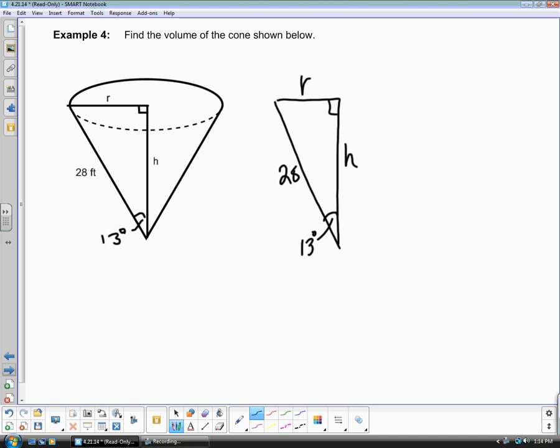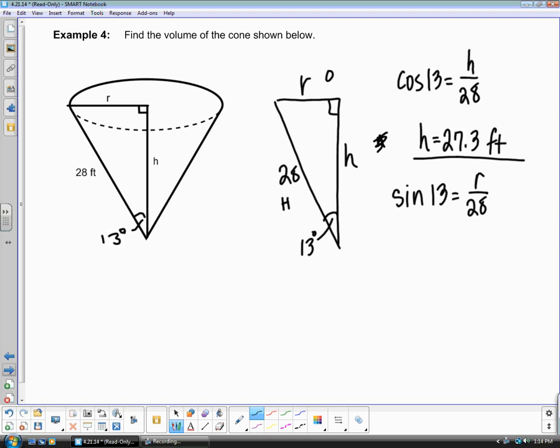Let's go ahead and find the height first this time. If we want to find the height, we're going to have the adjacent side and we're going to have the hypotenuse. In that case, we have to use cosine. So cosine of 13 equals adjacent over hypotenuse. And in order to find your radius, we are now going to have the opposite and hypotenuse, which is sine. So we'll have sine of 13 equals r over 28. Your height comes out to be 27.3 feet and your radius is going to come out to be about 6.3 feet.